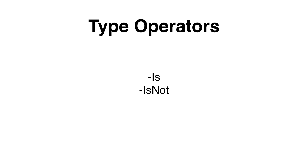The type operators work with data types, for example with strings, with integers, with arrays, with objects and so on. With is and is not, you can compare a variable of a certain data type like an object, a string and so on. If you want to check if a certain value is not of a certain data type you would use the is not. Up next is the as operator. You can display contents in a different data type, like converting an integer to a string or a string into a date and time.